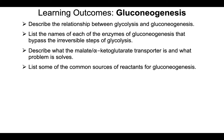We're going to be talking about gluconeogenesis in this video. By the time you're done watching it, I want you to be able to describe the relationship between glycolysis and gluconeogenesis, list the names of each of the enzymes of gluconeogenesis that bypass the irreversible steps of glycolysis, describe what the malate alpha-ketoglutarate transporter is and what problem it solves, and list some of the common sources of reactants for gluconeogenesis.